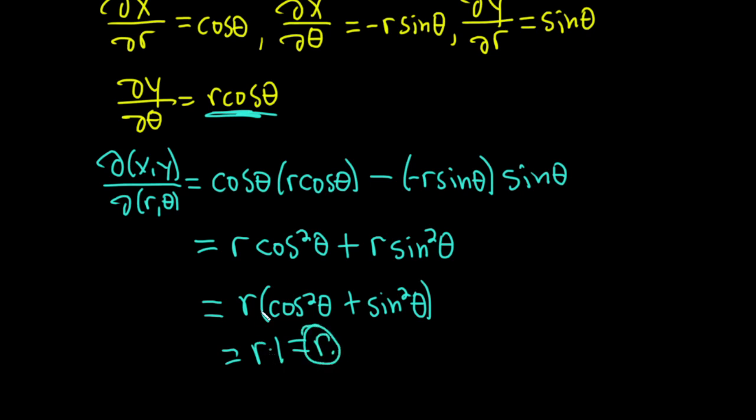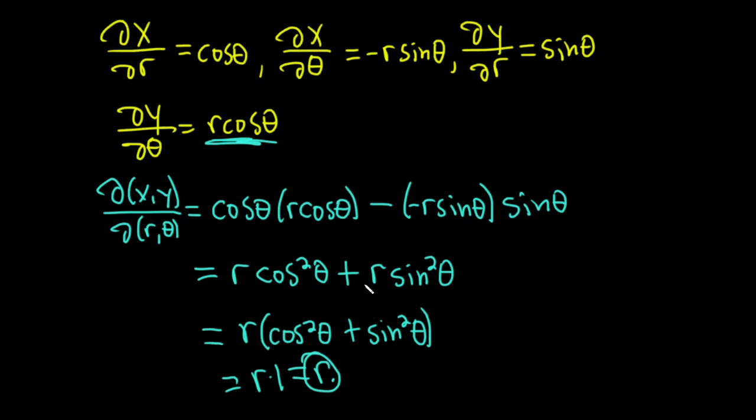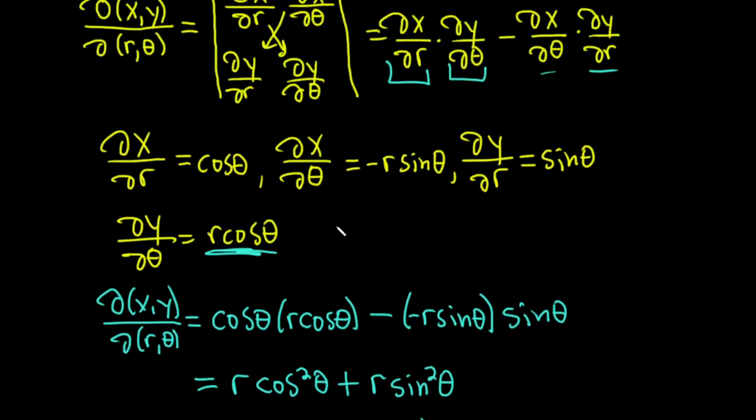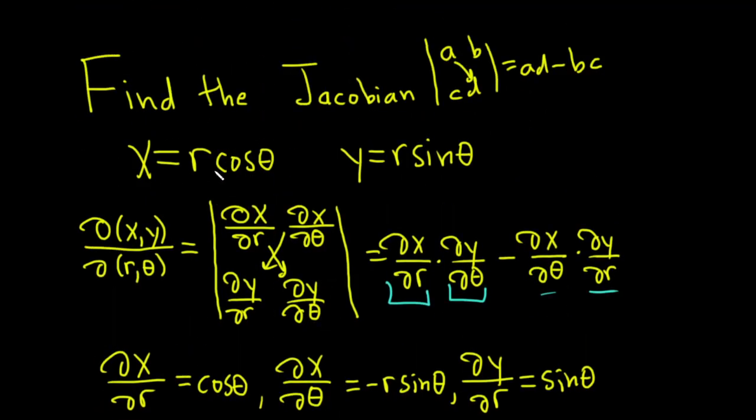So pretty cool. And hopefully this example has showed you how to compute the Jacobian for a change of variables. In this case, given by x equals r cosine theta and y equals r sine theta. I hope this video has been helpful to someone out there in the world. Good luck.